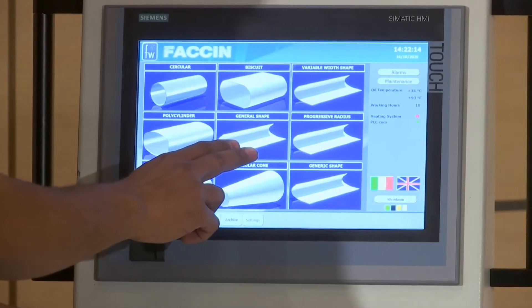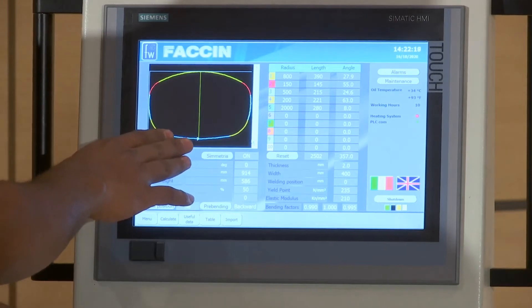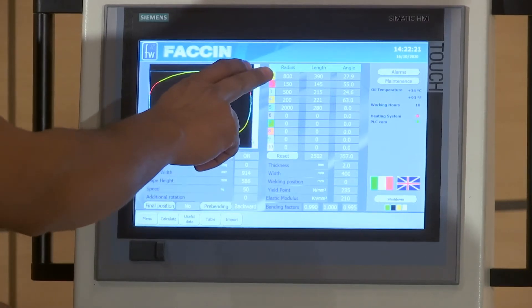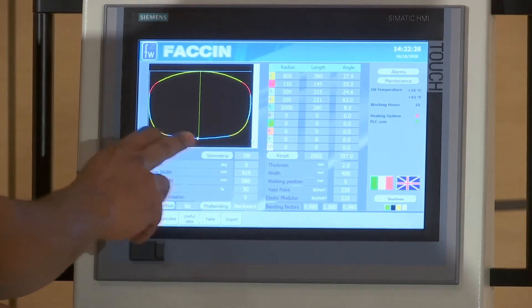Now we are going to select a general shape on which we have imported a DXF file from the CAD. And we have generated five different radius as you can see on 180 degrees. Fantastic.